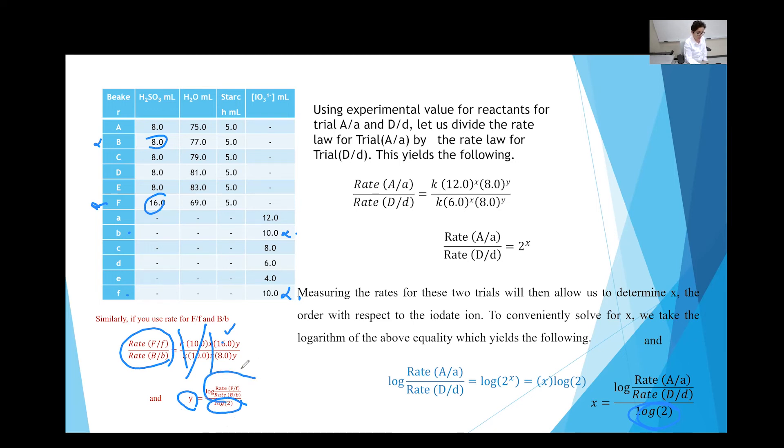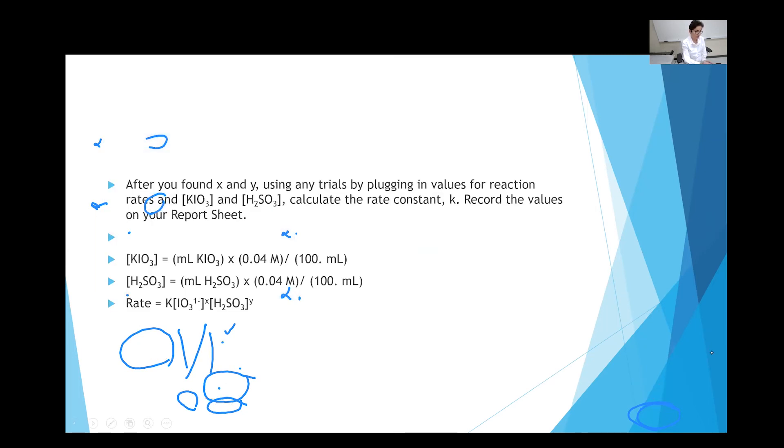This part, the log of rate F, trial F over rate trial B, can be found experimentally because you do the trial, you find the number of seconds, and you use rate equals 1 divided by number of seconds to get the rate for each one separately. It takes time for you to do the calculation, but you are given this example in the lab manual as well. I also have the explanation here, and I hope that is going to help you. This explanation and the lab manual would help you to perform all your calculation with no problem.